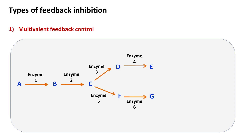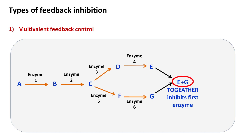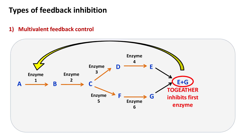Multivalent feedback control. In this type of feedback control mechanism, the end products of the pathway together inhibit the first enzyme of the pathway. The inhibition usually occurs when the concentration of end products increases.